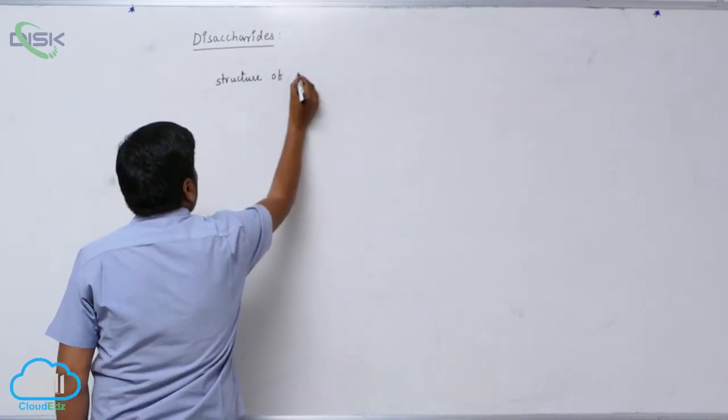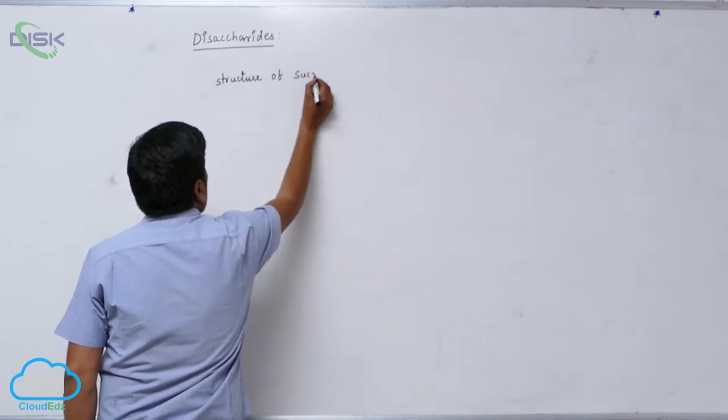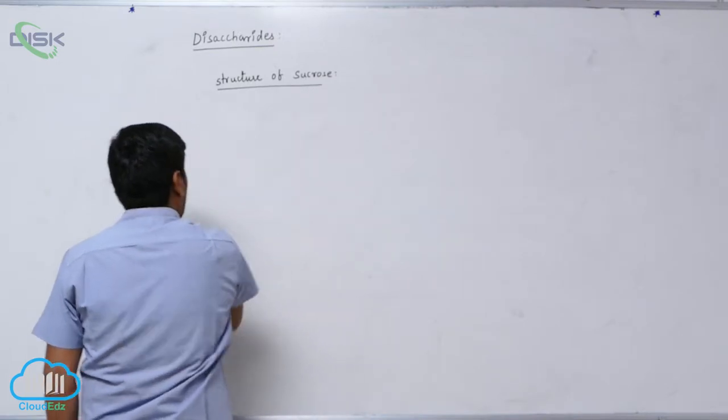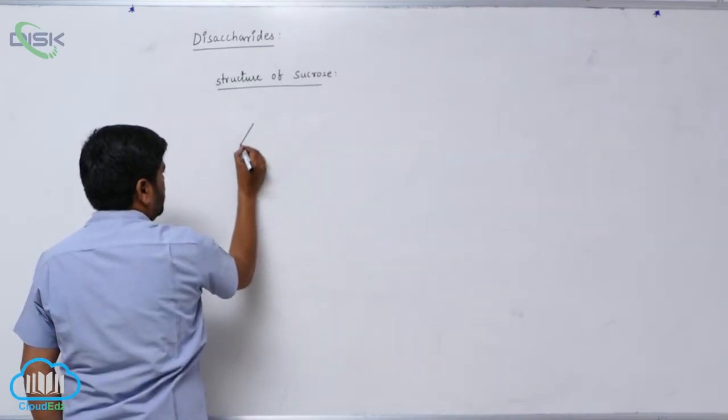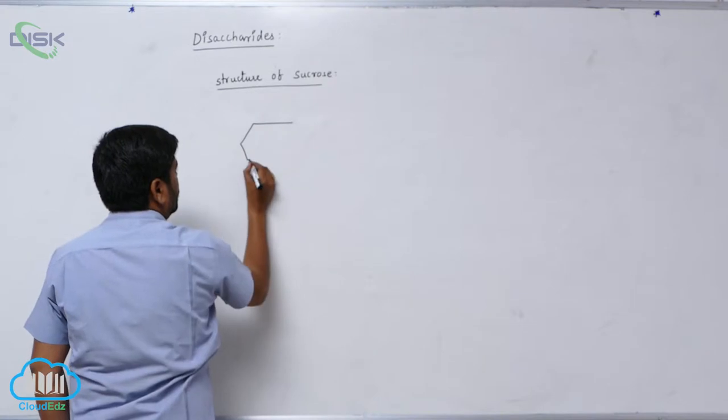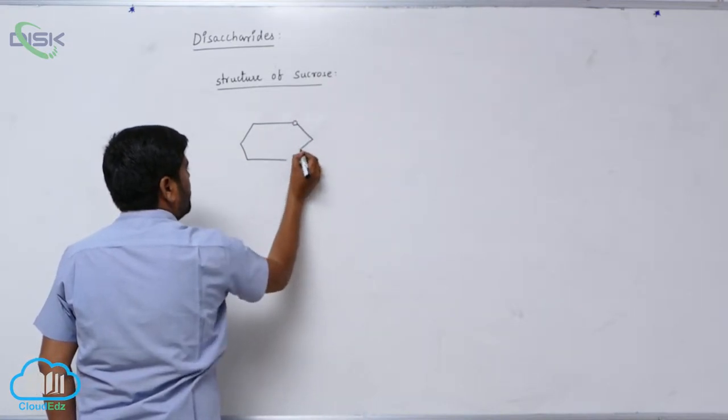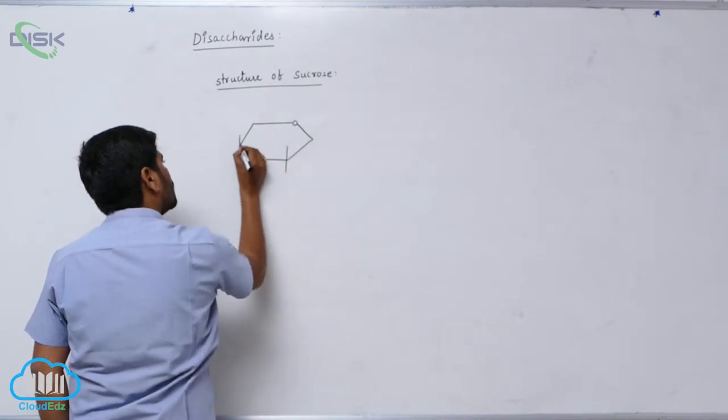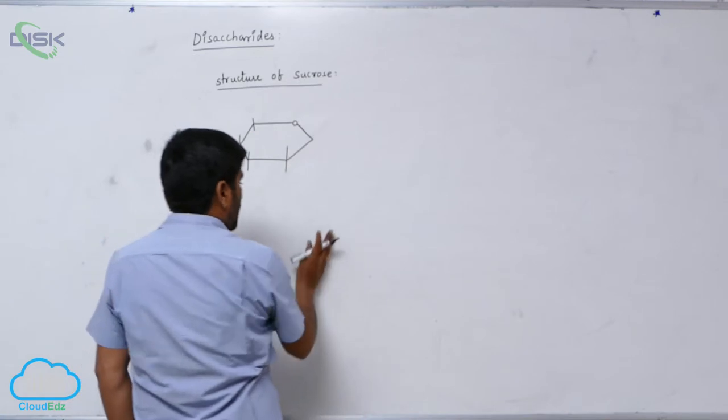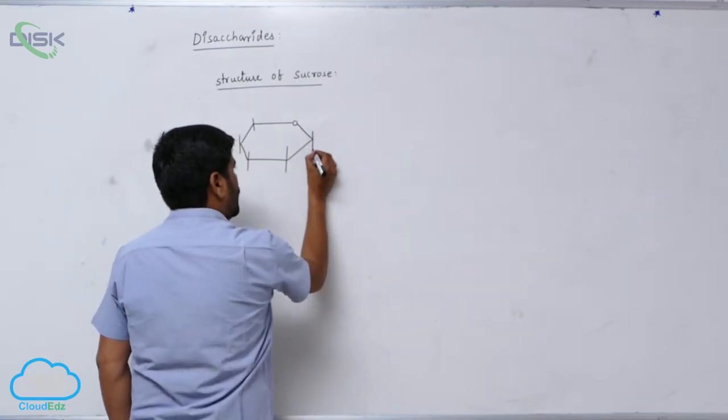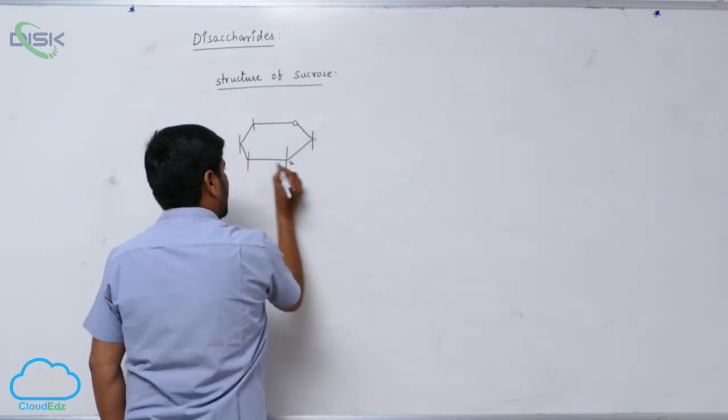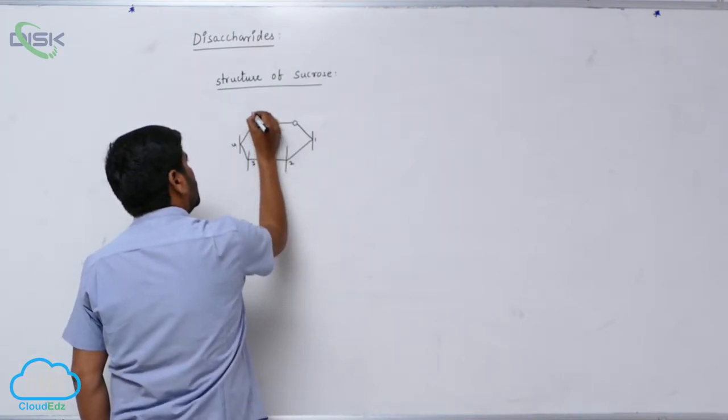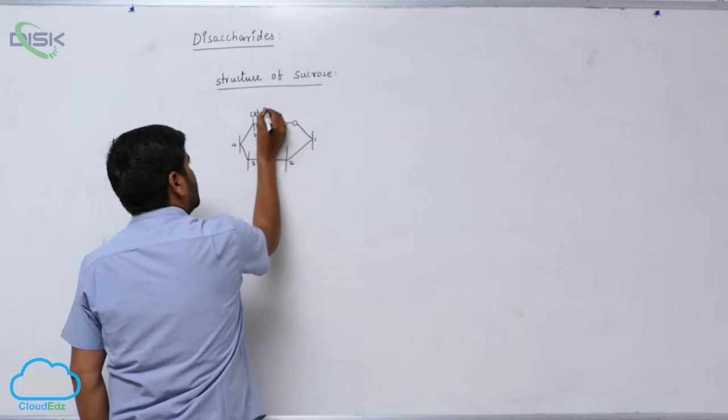Structure of sucrose is alpha form of glucose. Alpha means the first carbon OH. This is the first carbon, second, three, four, five. There is hydrogen CH2OH.